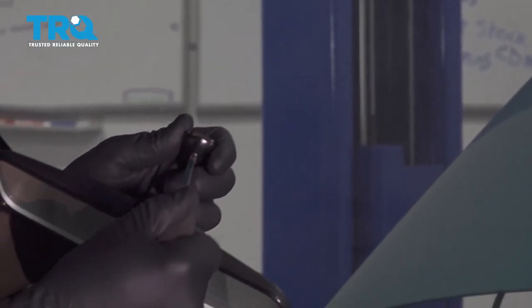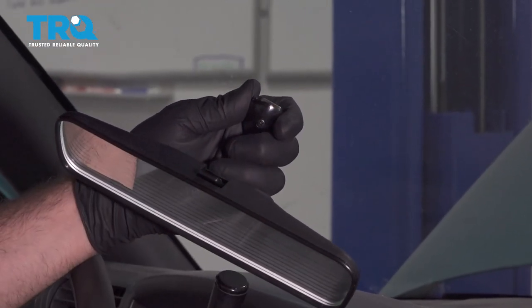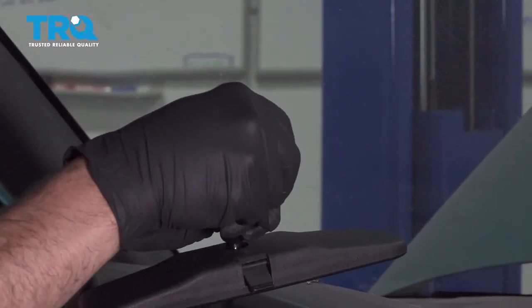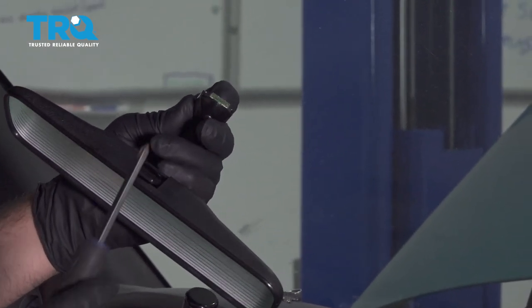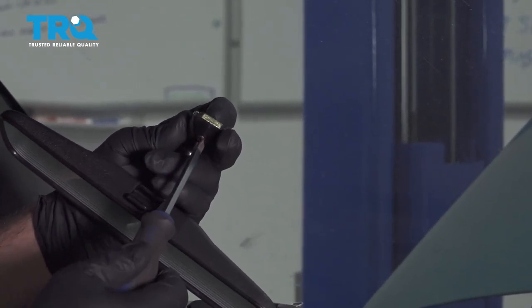When you get your mirror, use your Phillips head screwdriver to loosen the screw on the back. This will allow our metal back to come out, which is our mount.